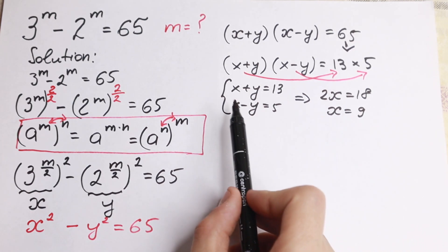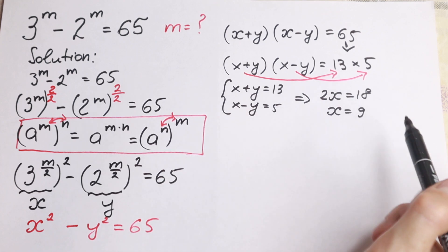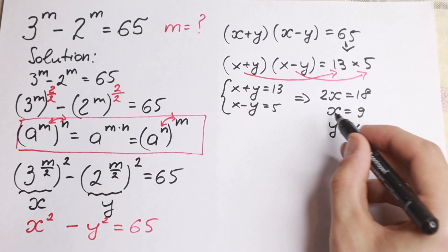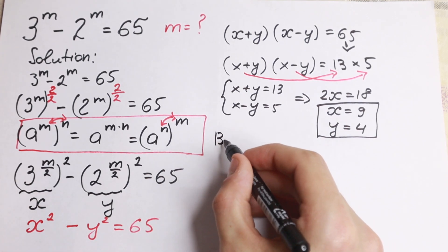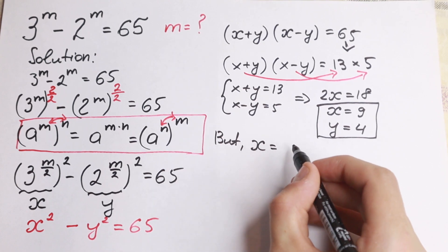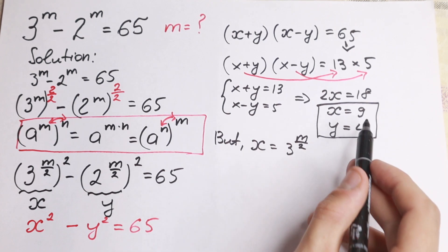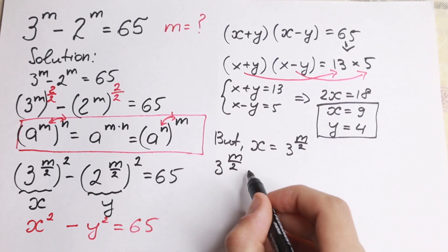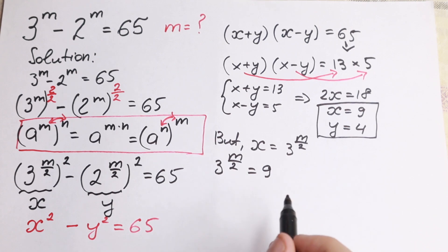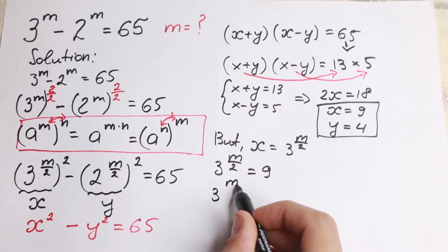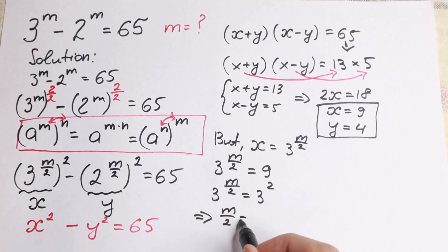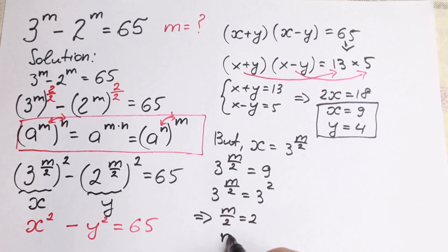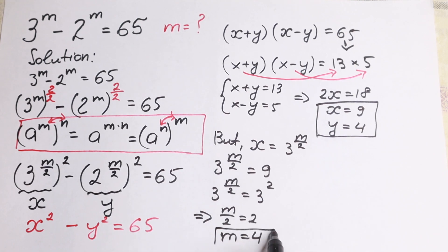Plugging x equals 9 into x minus y equals 5 gives y equal to 4. Now, since x equals 3 to the power m over 2 and x equals 9, we have 3 to the power m over 2 equal to 9, which is 3 squared. So m over 2 equals 2, and therefore m equals 4.